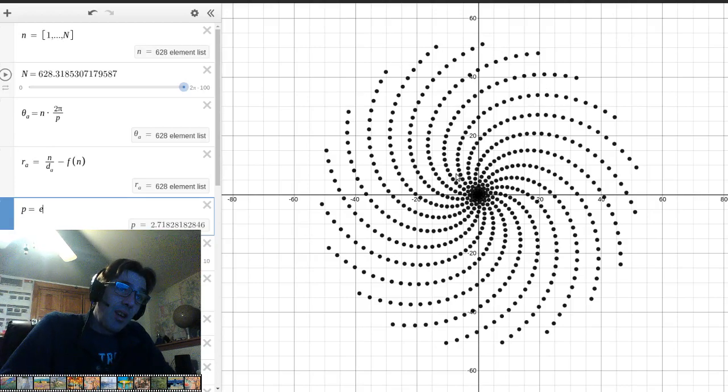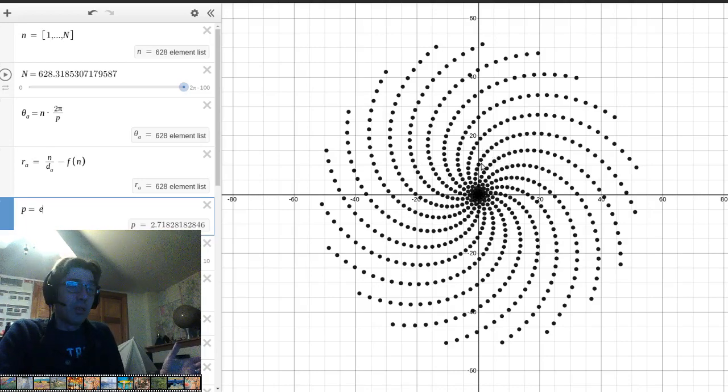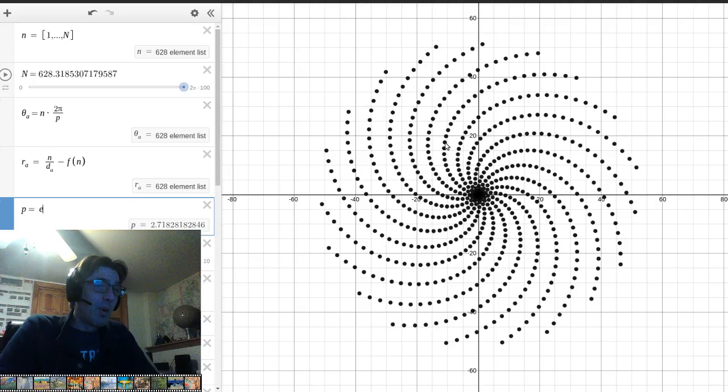starting around here, it gets pretty well approximated by a ratio, even though it's irrational, transcendental, in fact, meaning there is no ratio that gets it perfect. Like pi, it has an infinite number of digits.